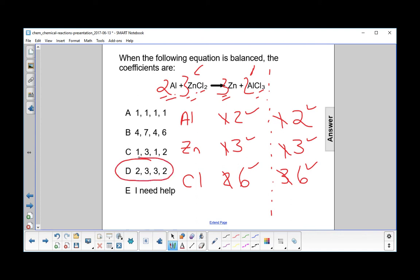So the whole trick there was cross-multiplying the chlorines. So the answer is D.